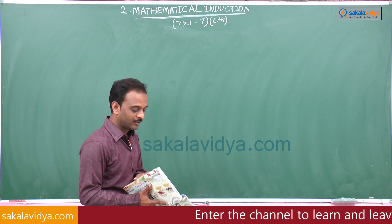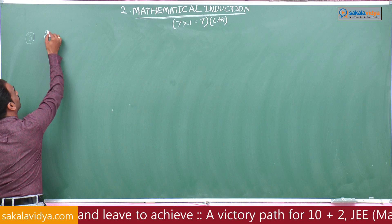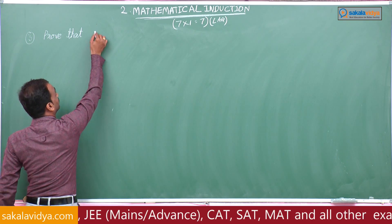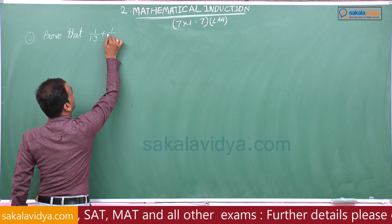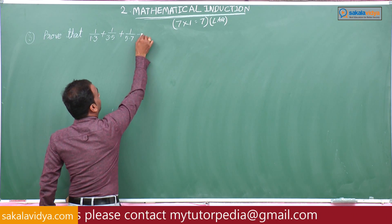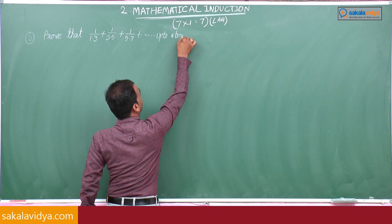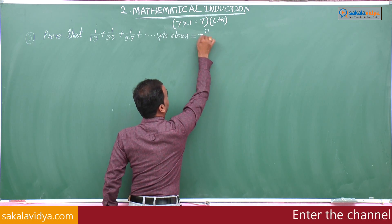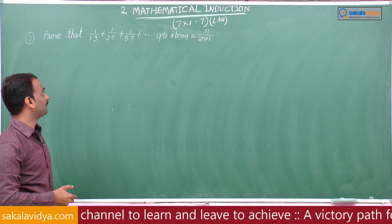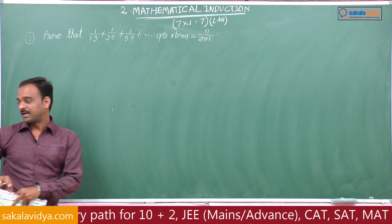Problem number 3: Prove that 1/(1×3) + 1/(3×5) + 1/(5×7) + ... up to n terms is equal to n/(2n+1).